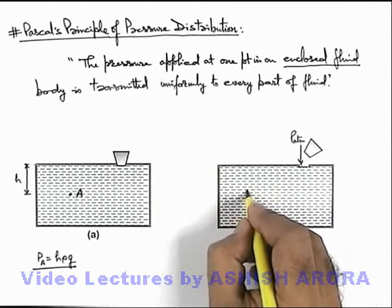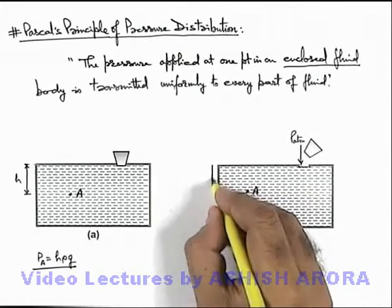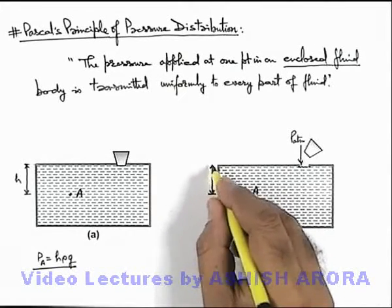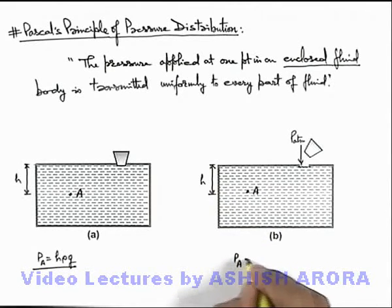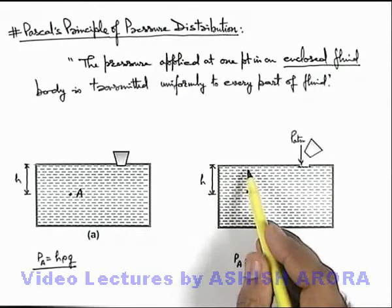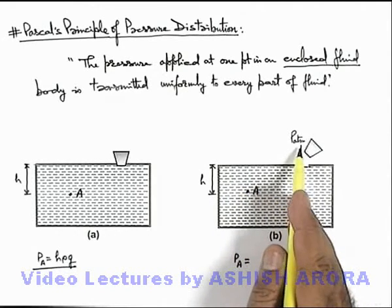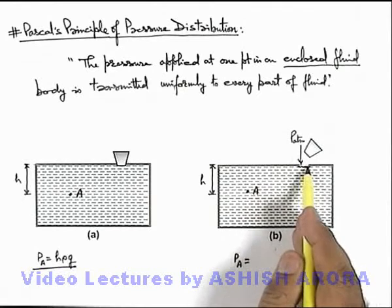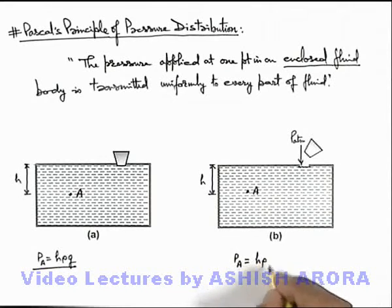Now in this situation, point A is again considered — it is at depth h below the top layer of the liquid. The pressure at point A, which was h·ρ·g due to the weight of liquid above it, will now be increased by an amount P_atmospheric, because P_atmospheric is applied at a point on the surface. So according to Pascal's law, the pressure at point A can now be written as h·ρ·g + P_atmospheric.